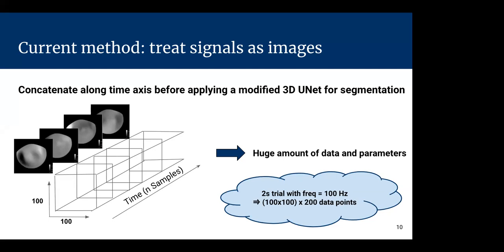Moreover, in the 3D UNet, a lot of convolutional layers are used, so we have a huge number of trainable parameters. To illustrate the amount of data: if we consider a trial lasting two seconds with a sample frequency of 100 Hz, we have 200 time steps. With 100×100 pixels, we have 200,000 data points per trial. This is a huge amount of data, and we want to reduce it.